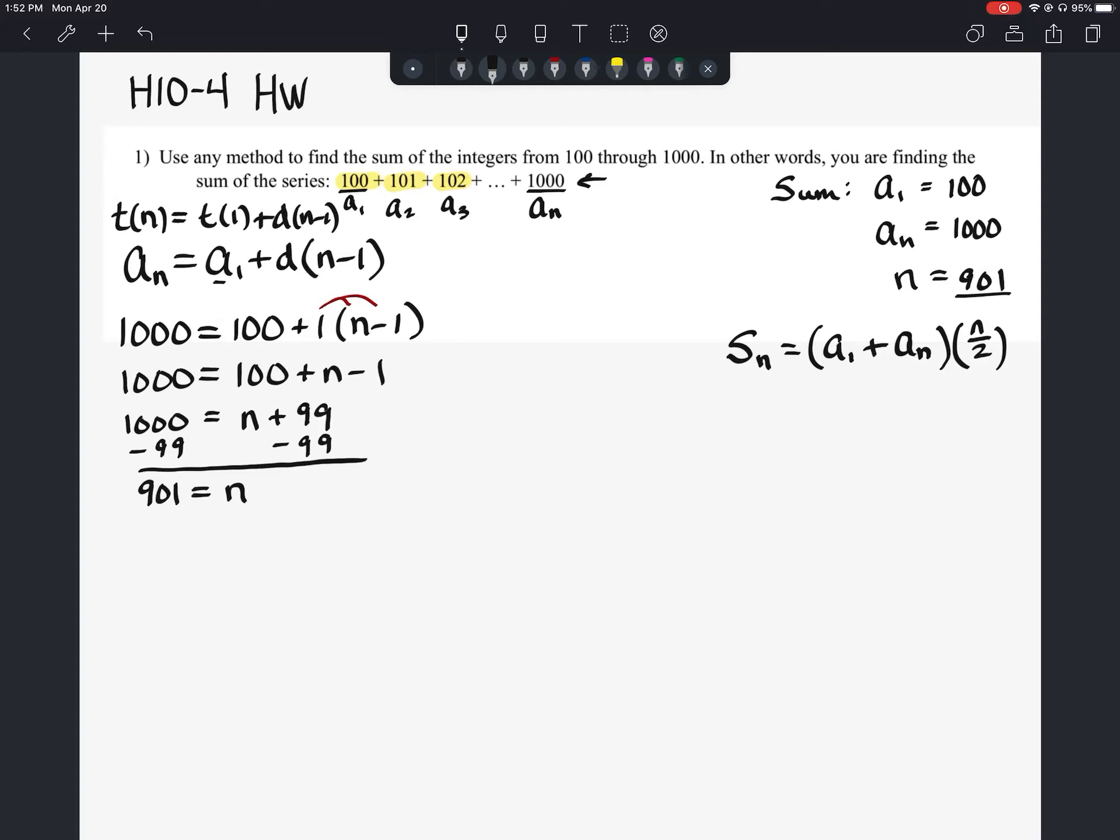So now that we know that n is 901, we can say the sum of the first 901 terms in this series is going to equal our first term plus the last term times 901 divided by 2.